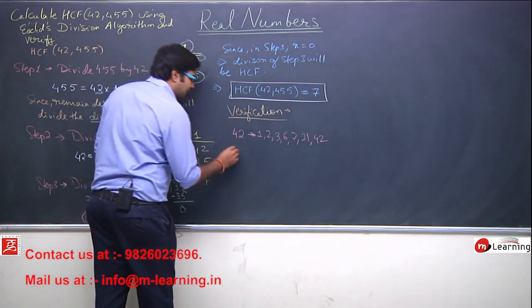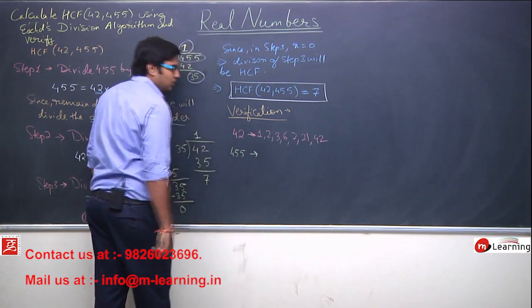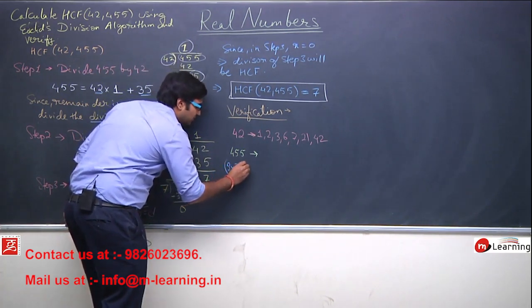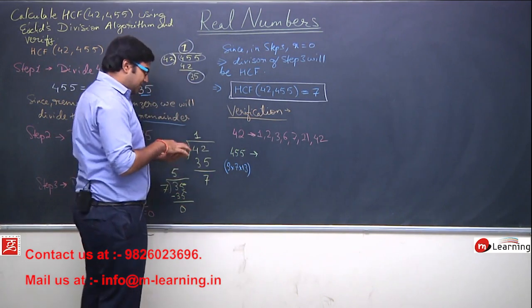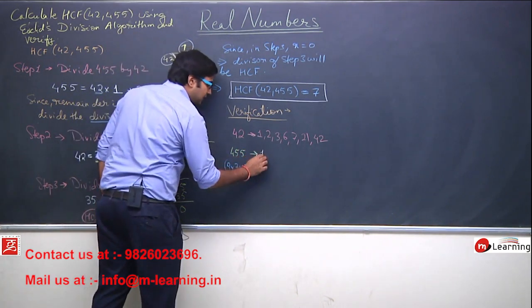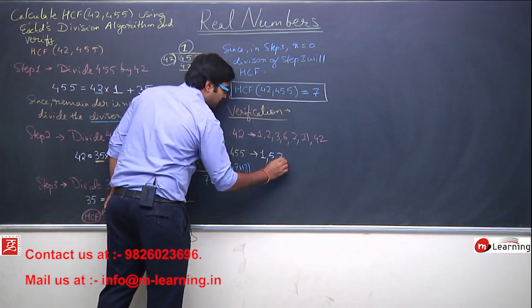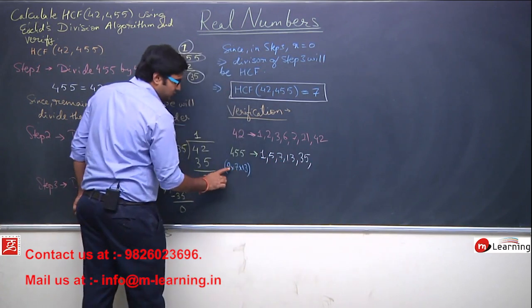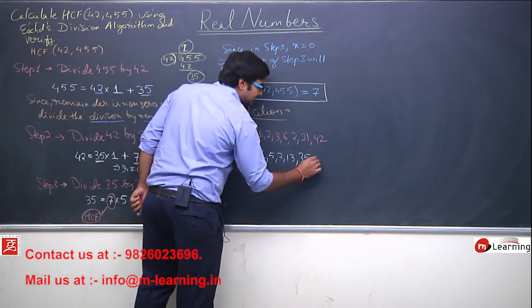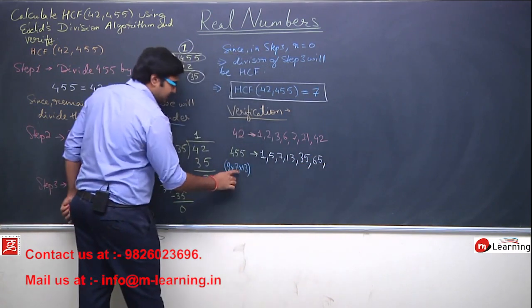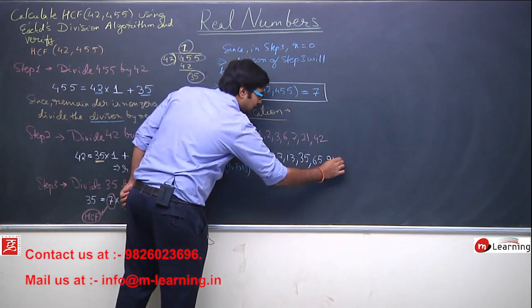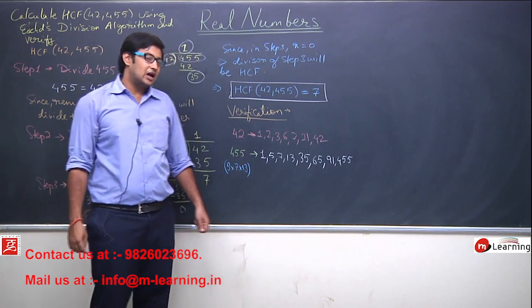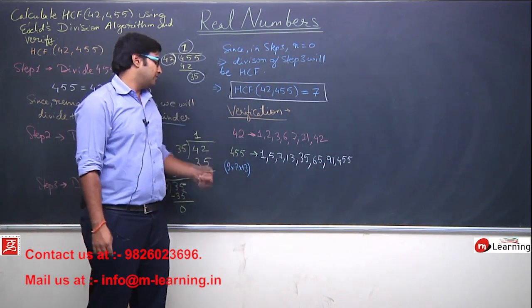Similarly, if I ask you the factors of 455, now what you can see is 455 is made up of 5 into 7 into 13. So I will say the factors of 455 will be 1, 5, 7, 13, 5 into 7, that is 35, 5 into 13, that is 65, then 7 into 13, that is 91 and then last one is 455. So all these are the factors of 455.